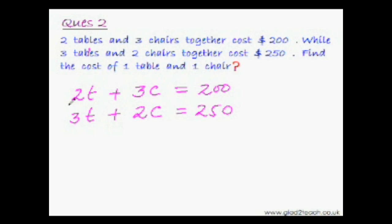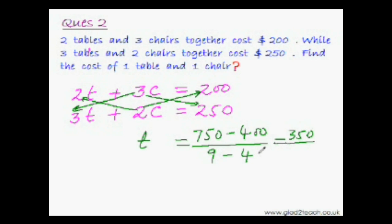Now just solve them. Since here the coefficients are different, the fastest way to solve these simultaneous equations would be the double cross multiplication method. So t would be equal to 750 minus 400 divided by 9 minus 4. So 750 minus 400 is 350 and 9 minus 4 is 5. So that means the cost of the table is 70 dollars.